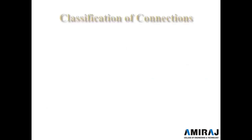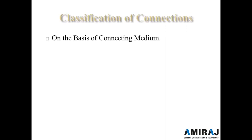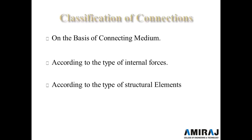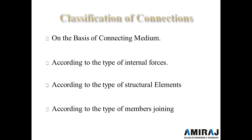Now, what is the classification of connections? There are different types of connections on the basis of different criteria. First is on the basis of connecting medium. Second is according to the type of internal forces. Third is according to the type of structural elements. The last one is according to the type of members joining. These are the types of connections depending upon the situation.